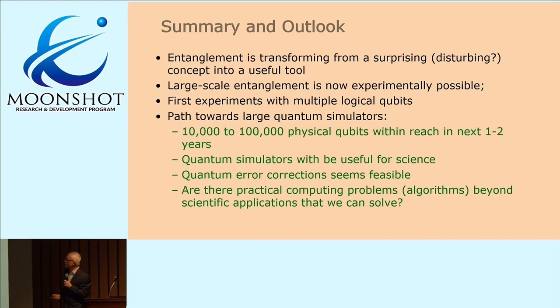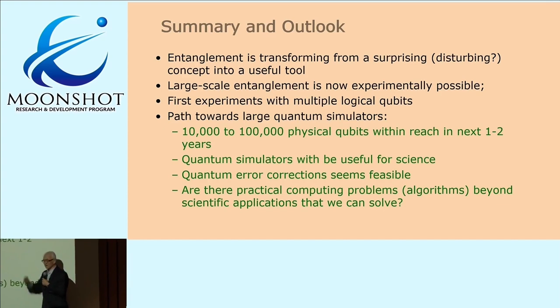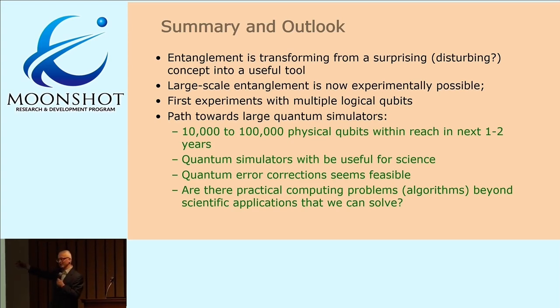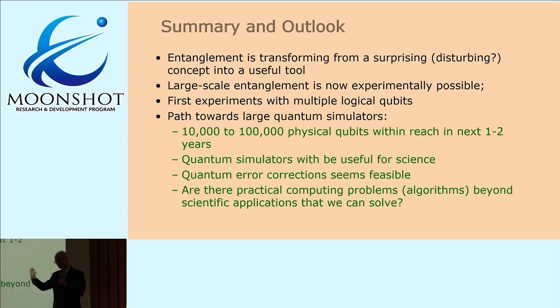Maybe just to summarize where I see things. I will predict that we will be at over 10,000, maybe closer to 100,000 physical qubits within the next one to two years. There are no obvious roadblocks to that. The lasers are there. The things are there. It is also very clear that quantum simulators are useful for science. Quantum error correction seems feasible, maybe not at the level yet where we can do 10 to the 12 operations, but maybe 10 to the 6, 10 to the 7, 10 to the 8 operations. Within that time frame, we can start to think about experiments with a number of logical qubits, maybe on the order of 10 or so.